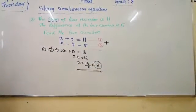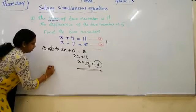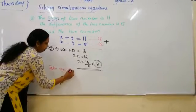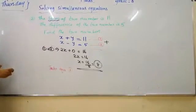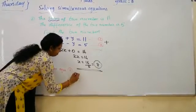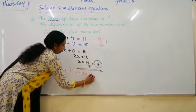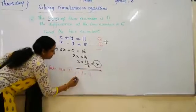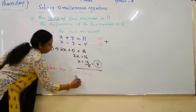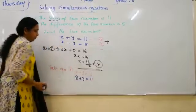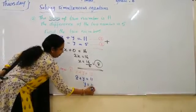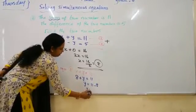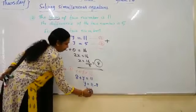So now finding the y value. Take equation one, x plus y equal to 11. Give the values, x is equal to 8. So 8 plus y equal to 11. y is equal to 11, then 8 will go to another side, it will become minus. So y is equal to 3.